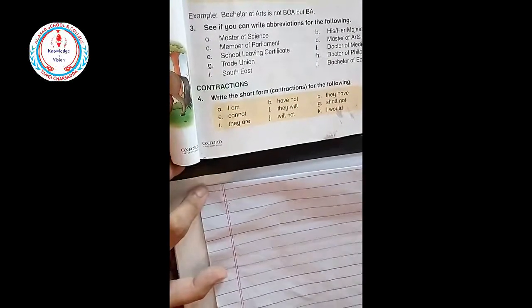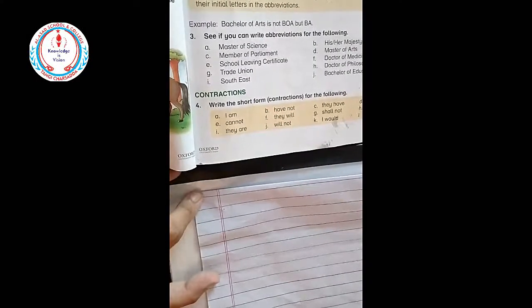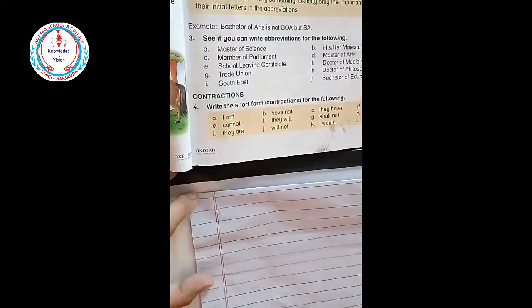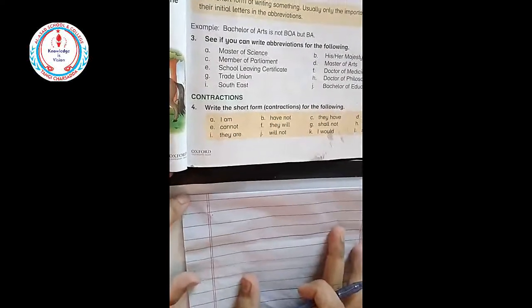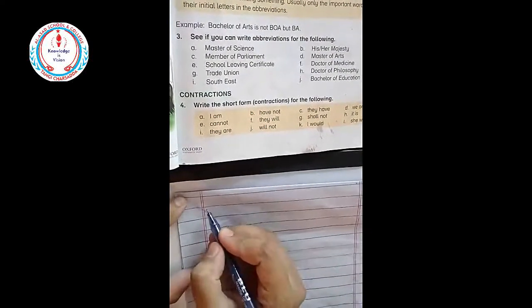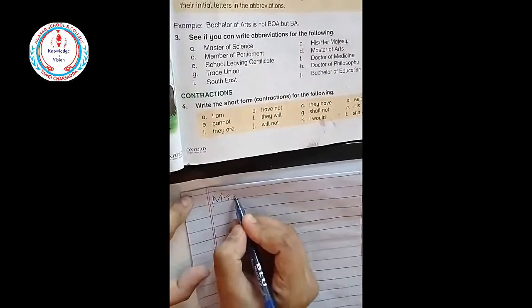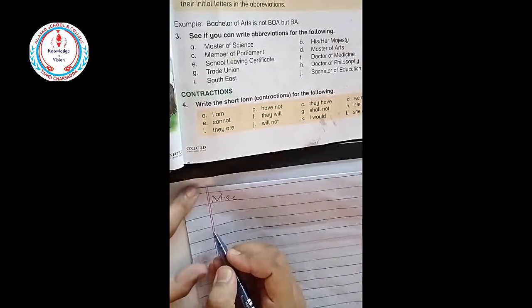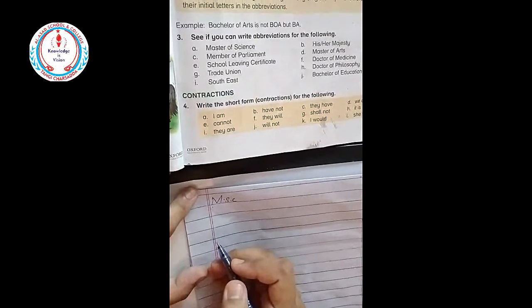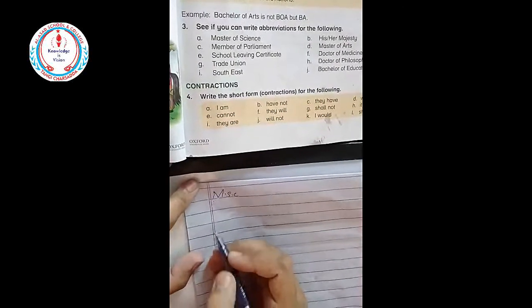Now let's come to the question. See if you can write abbreviations for the following. First is Master of Science. How will we write Master of Science? For this we will write MSc. Next is His or Her Majesty, for this we will write HM.